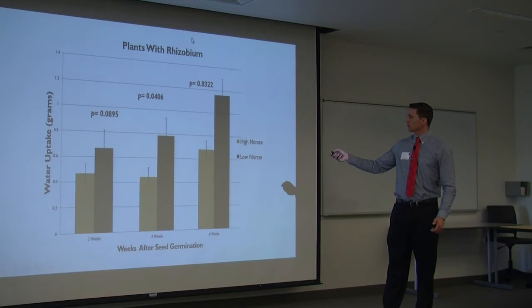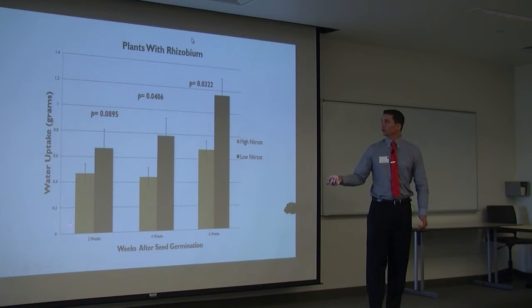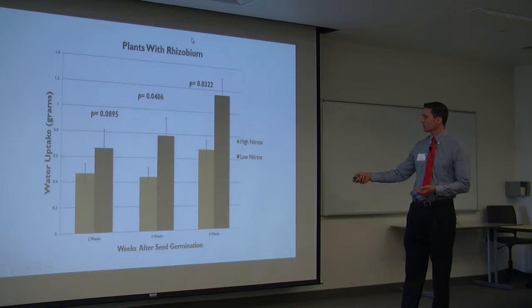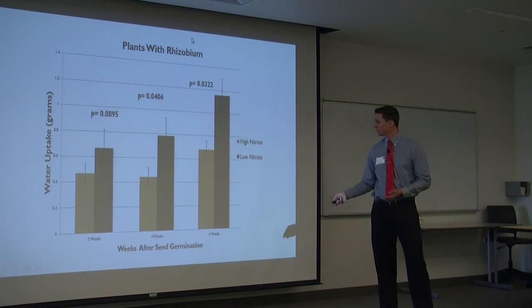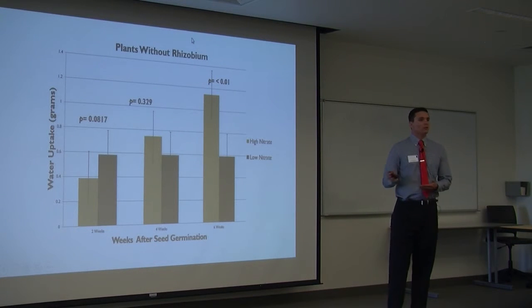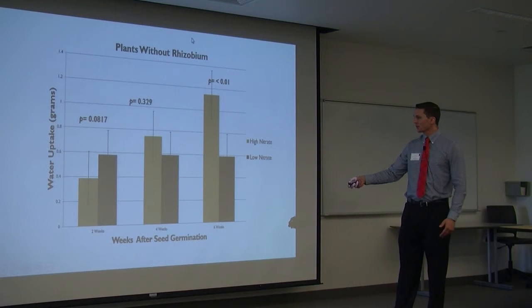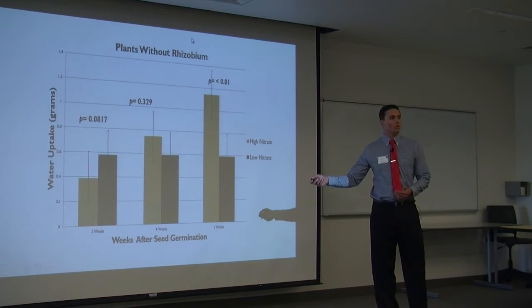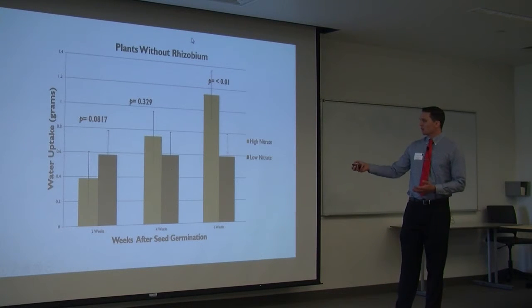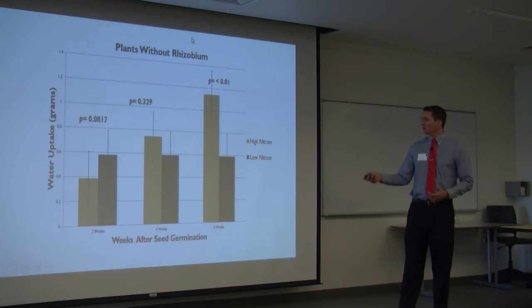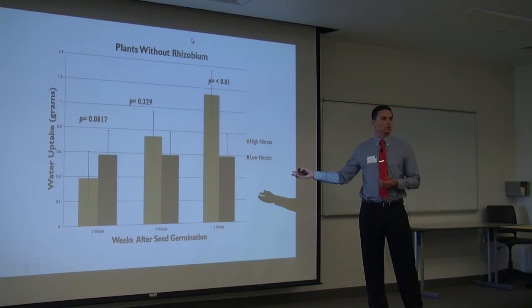Above are the p-values of significance. For the first 2 weeks of the rhizobium plant, they took up the low nitrogen solution to start, and they continued to take up more and more of this low nitrate solution throughout the 4 and 6-week periods. For the plants without rhizobium, the high nitrate is shown in gold and the low nitrate in black. We saw in the first 2 weeks that the non-rhizobium plants took up low nitrogen solution more than the high nitrate solution. At the 4-week mark, there was close to an equal amount taken up of each side — no preference. And in the 6-week period, there was a substantial increase in the high nitrate solution absorbed versus the low nitrate solution.